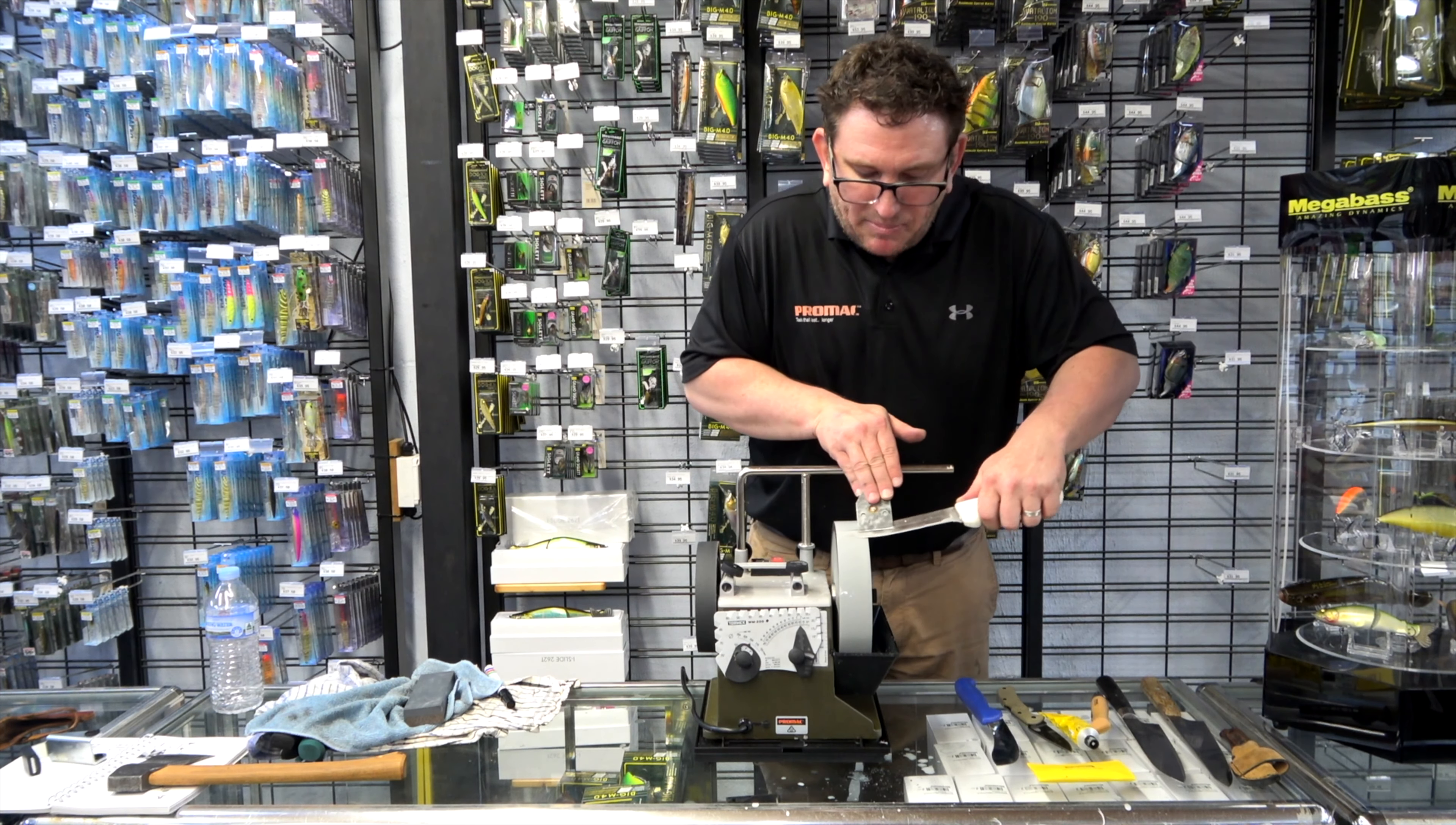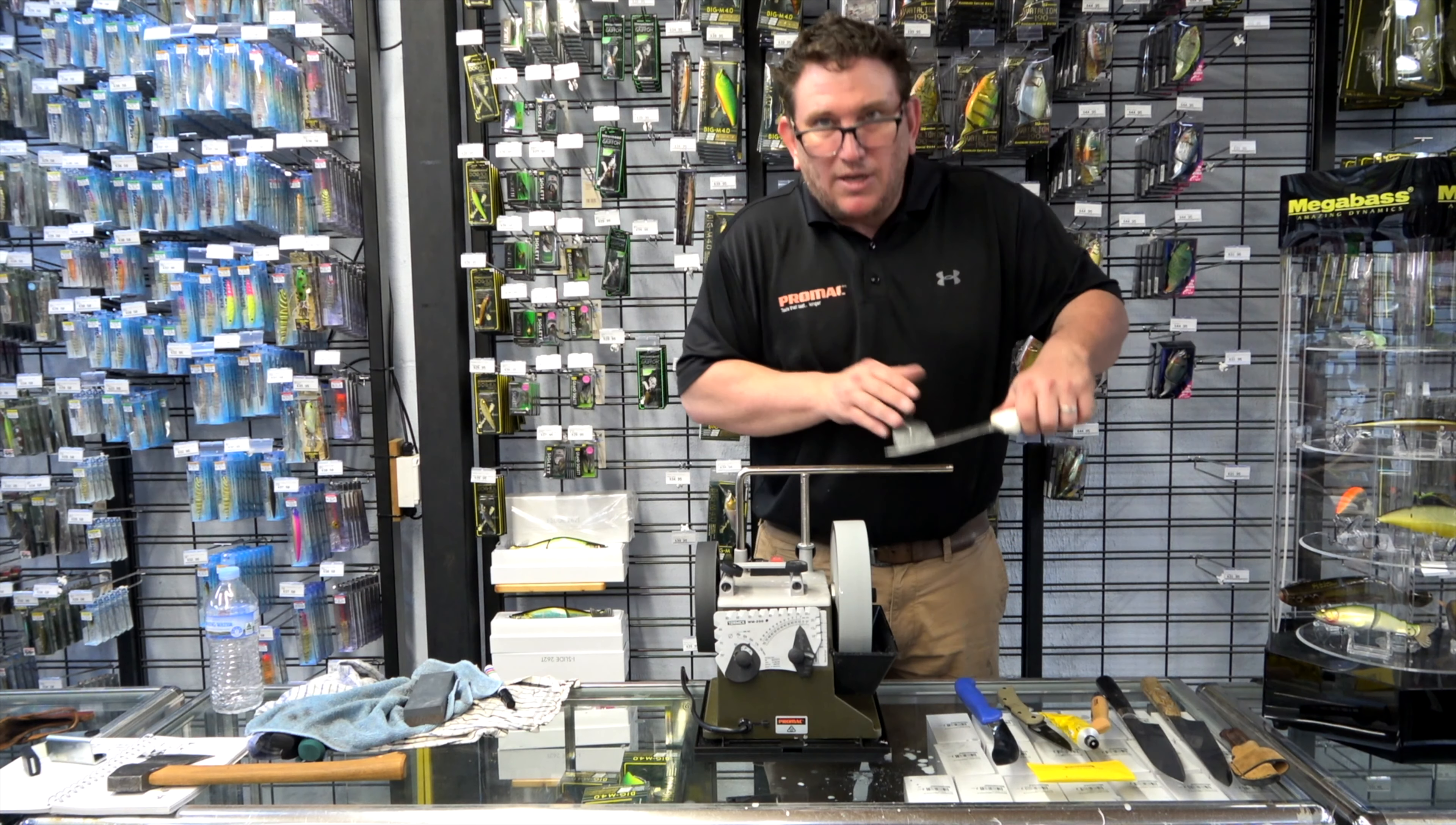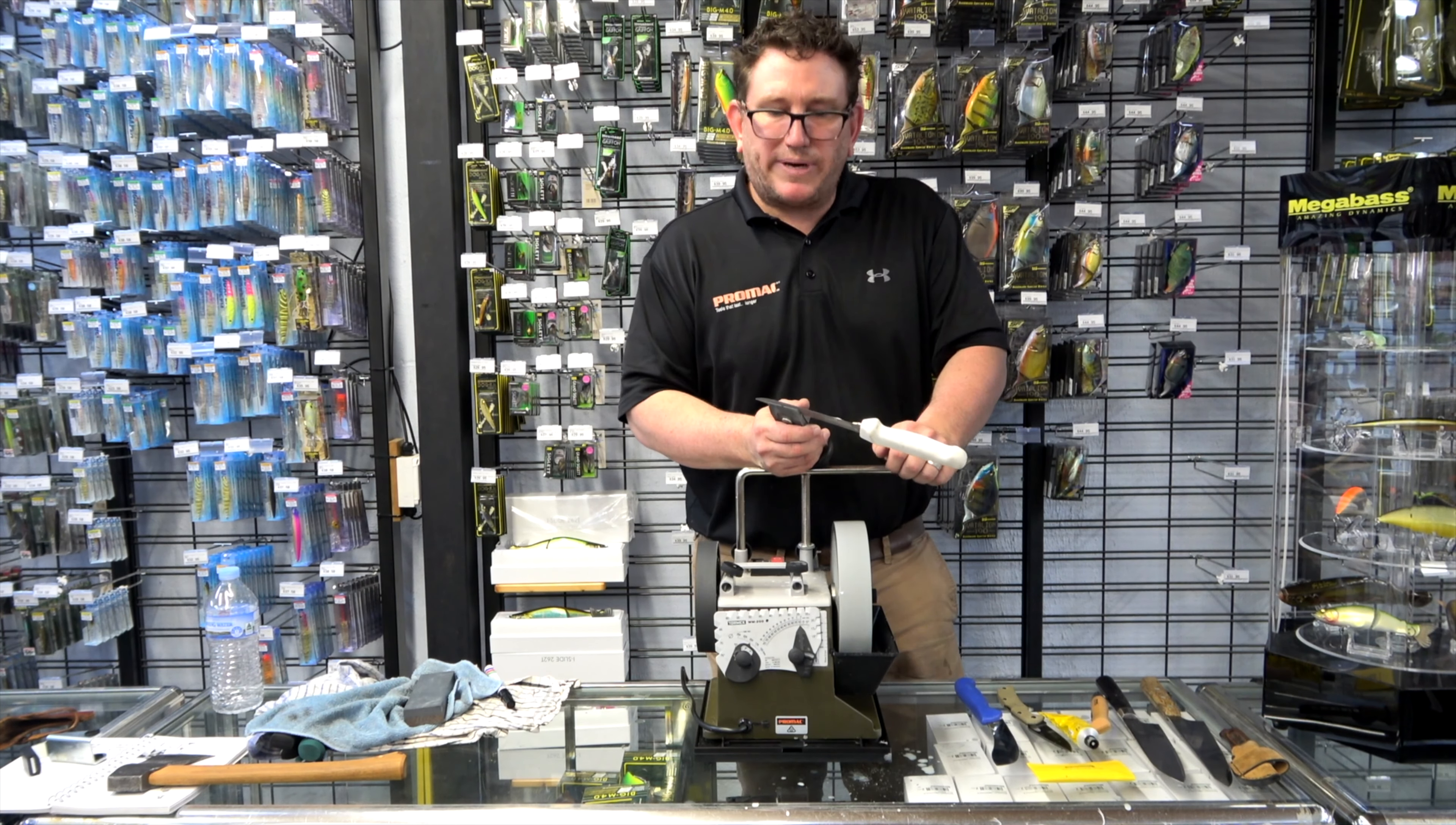You will only ever need to do the shaping process once on your knives. Once you've created the correct shape on the first sharpen, you'll only ever have to do the sharpening process. So the process will be a lot faster on your second sharpen. It may ever take you two or three passes to recreate your edge.